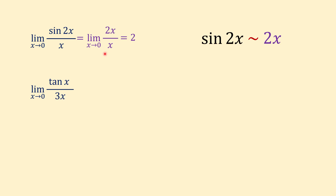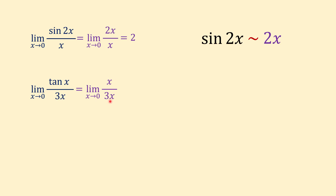Another example: limit of tangent of x over 3x when x approaches 0. If we replace tangent of x with x, our limit is the limit of x over 3x when x approaches 0. If we cancel x from numerator and denominator, the value of the limit is one third.